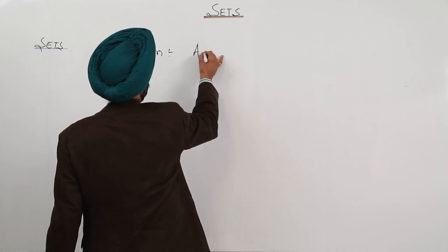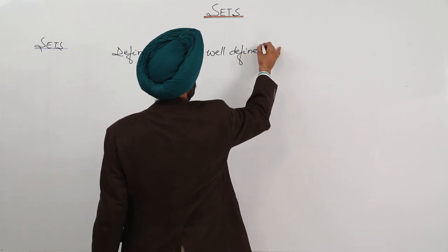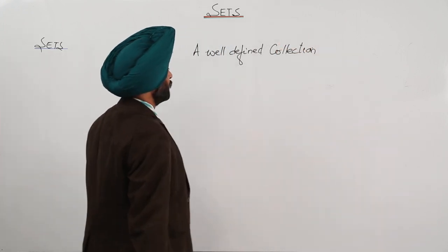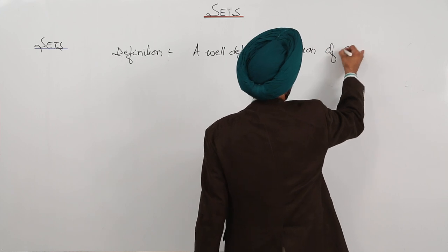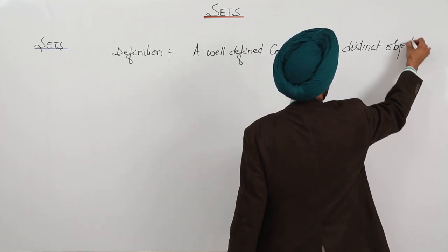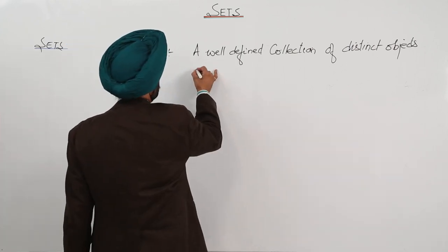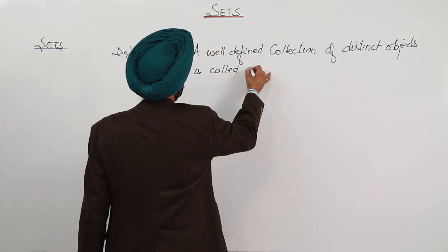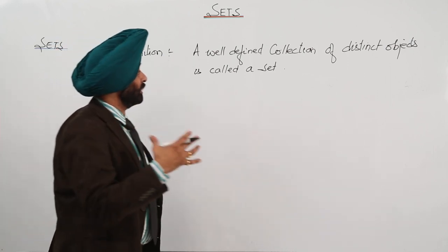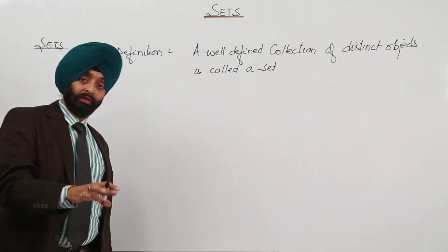Now, a well defined collection, a well defined collection of distinct objects. A well defined collection of distinct objects is called a set. This is the exact, very nice definition. Now, we have gone through a few examples. We have discussed a few examples. One more I am going to discuss.